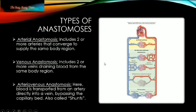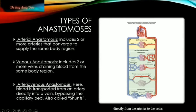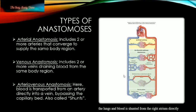Another form of anastomosis is the arteriovenous anastomosis. Here, blood bypasses the capillary beds — as you can see, there is no blood flow through them — and instead the blood travels directly from the arteries to the veins. This is also referred to as shunts, and it is similar to what happens in fetal circulation when blood flow bypasses the lungs and is shunted from the right atrium directly to the left atrium via the foramen ovale.